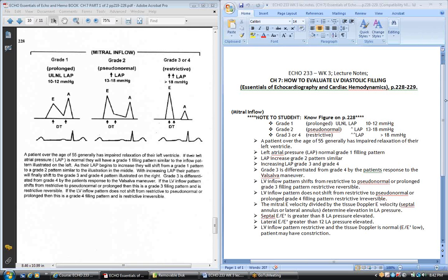Again, you see over here where it refers to, on the right hand side, it refers to differentiated between Grade 3 and 4 by a patient's response to a Valsalva. To determine that increased LA pressure, or left atrial pressure, again we use the mitral Doppler tissue Doppler E velocity.